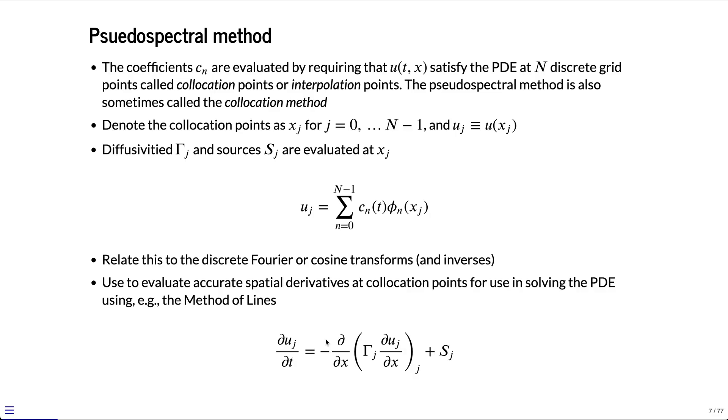The important thing in the pseudospectral method is that we make sure that u satisfies the PDE at N specific points as opposed to some other global measure. The collocation points, we'll denote those as xj for some j goes from 0 to N minus 1. These are points on the domain. We'll denote uj as u evaluated at xj. Similarly, for the diffusivities gamma and s, gamma j and sj are just the diffusivity and source term evaluated at the corresponding grid location.